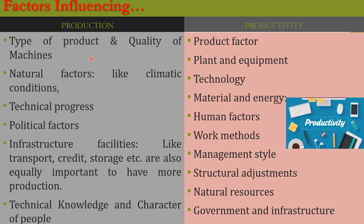Factors influencing productivity include: type of product, quality of the machine, natural factors, technical progress, technical knowledge, political factors, infrastructure facilities, and the character and willingness of the people. Other factors include product factors, plant and equipment, technology, material and energy, human factors, work procedures, management support from top management to workers, structural adjustments, natural resources, government, and infrastructure factors.